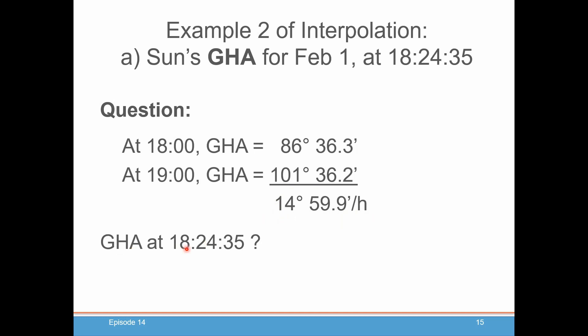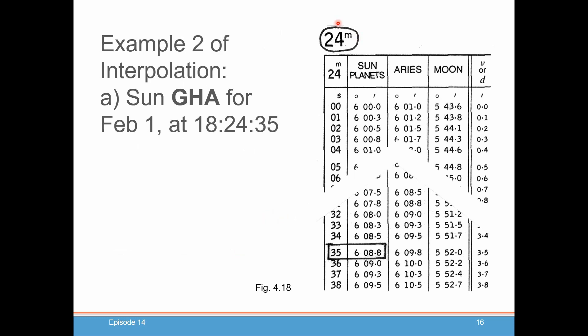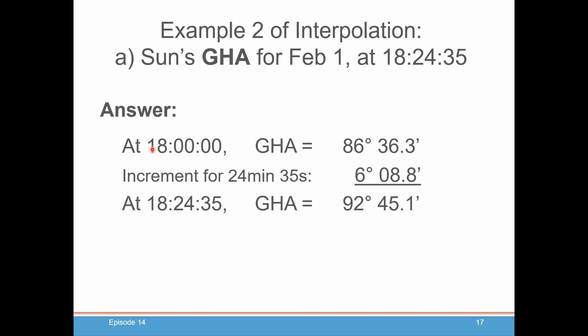We need to know what's the GHA at 18 hours, 24 minutes, and 35 seconds. We look at our table for 24 minutes. We go down to 35 seconds. And we see the sun will have moved 6 degrees, 8.8 minutes. We take our 1800 hours GHA. We add our increment for 24 minutes, 35 seconds, which we just pull out of the increments and corrections table. We add those two together. And we get 92 degrees, 45.1 minutes. The Almanac does all of that work for us.